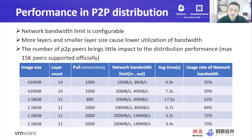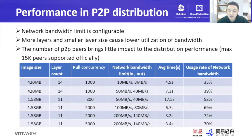Here are some features of P2P distribution with Kraken from our testing. The bandwidth limit of P2P distribution is configurable. More layers and smaller layer sizes cause lower bandwidth utilization, meaning distribution will be slower. The number of P2P peers brings little impact to distribution performance. Up to 15,000 peers are supported officially, and it works well in our production environment.